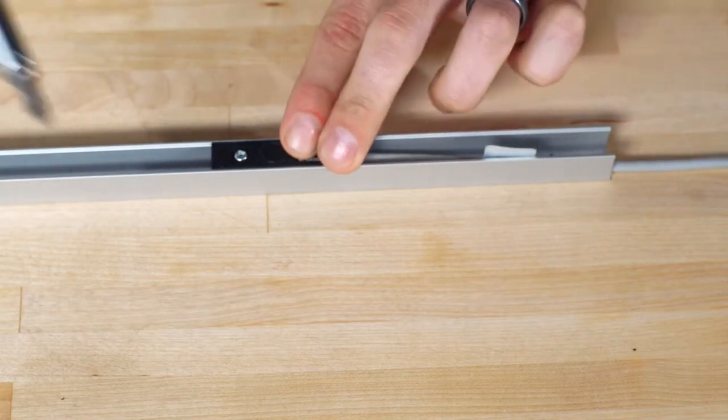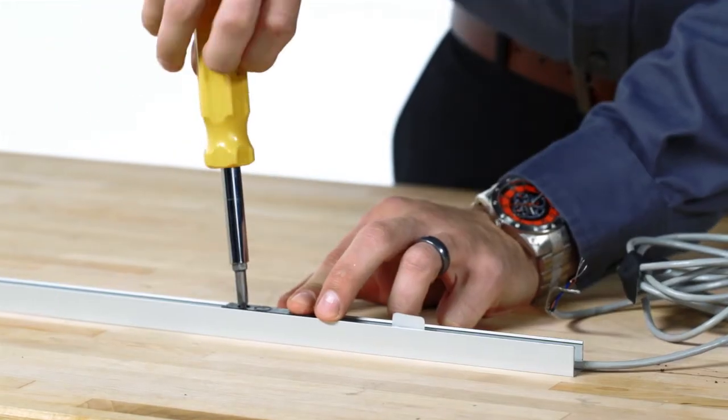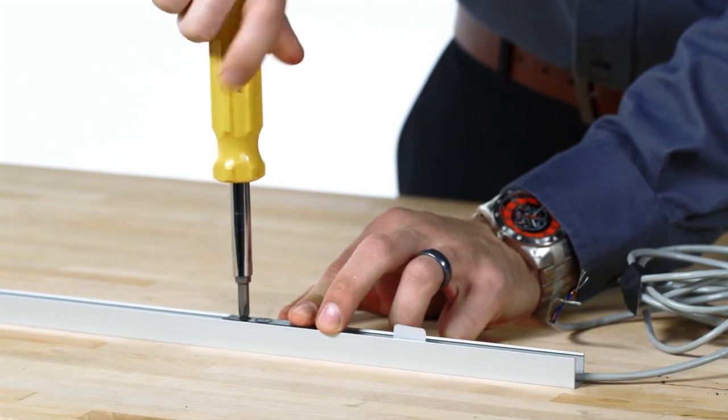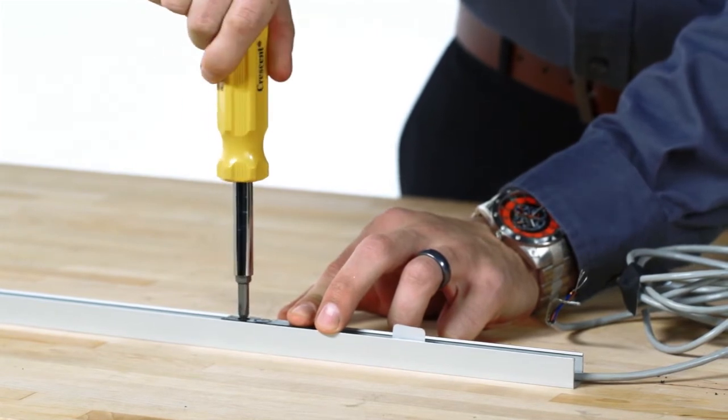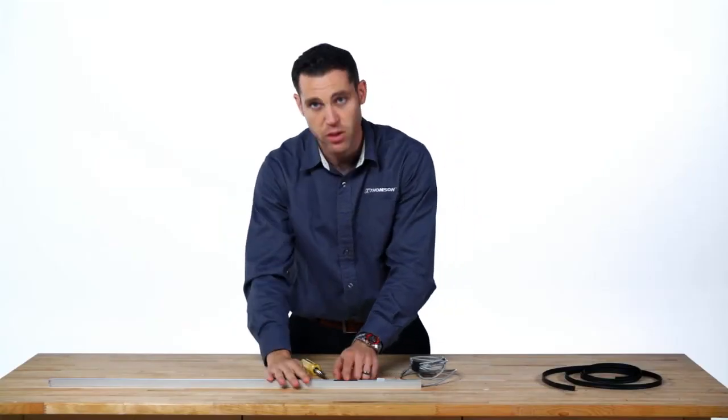To tighten it down, simply take your screwdriver, tighten the screw, then your limit switch is installed.